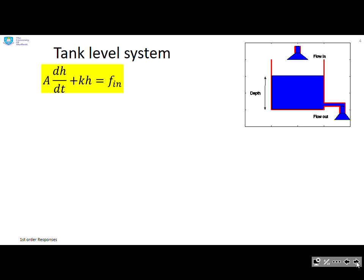Let's look then at tank level system. So again, you'll see the key point here is this plus sign in the differential equation. So the flow is basically distributed between the A dh term, which is the accumulation of the water in the tank, and the kh term, which is basically how much flow goes out through the exit pipe.